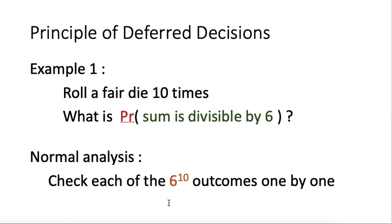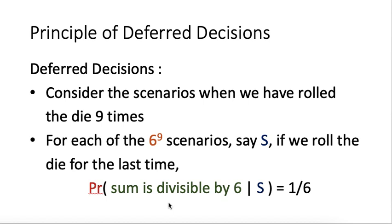This works but may take time. With deferred decisions, we consider the scenario where we have only rolled the die 9 times. At that point, we stop and consider — this is like fixing the first part of the random choices. There are 6 to the power 9 such scenarios. For a certain scenario S, we then roll the die for the last time to finish the experiment.